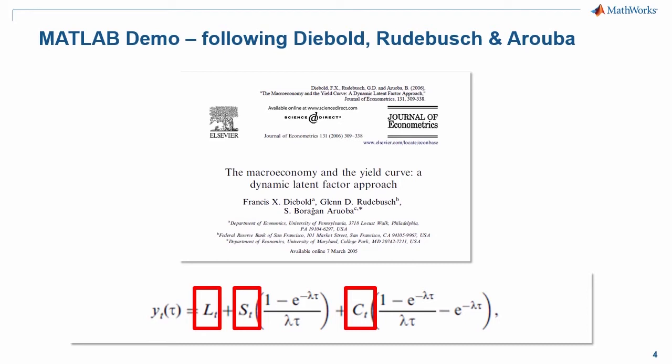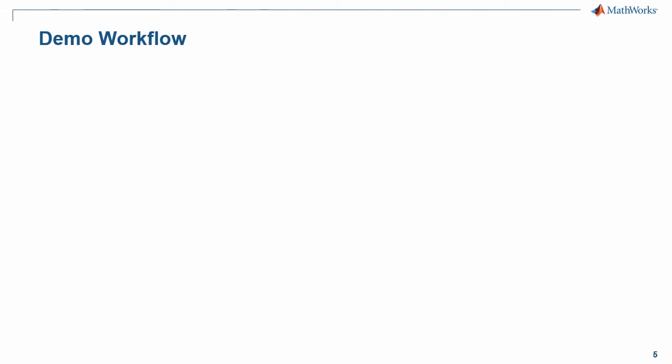So how would we do this in MATLAB using its tried and trusted functionality and toolboxes? This is our relatively simple workflow. First of all, we need some data. We're going to get data from the Federal Reserve Economic Dataset using our DataFeed Toolbox. From there, we will download historical values of the yield curve and historical values for our three macroeconomic variables.